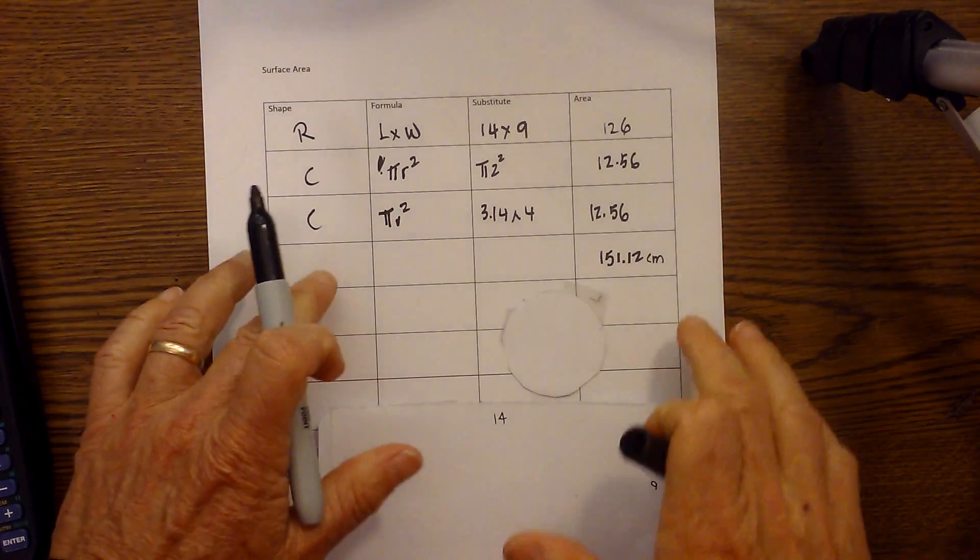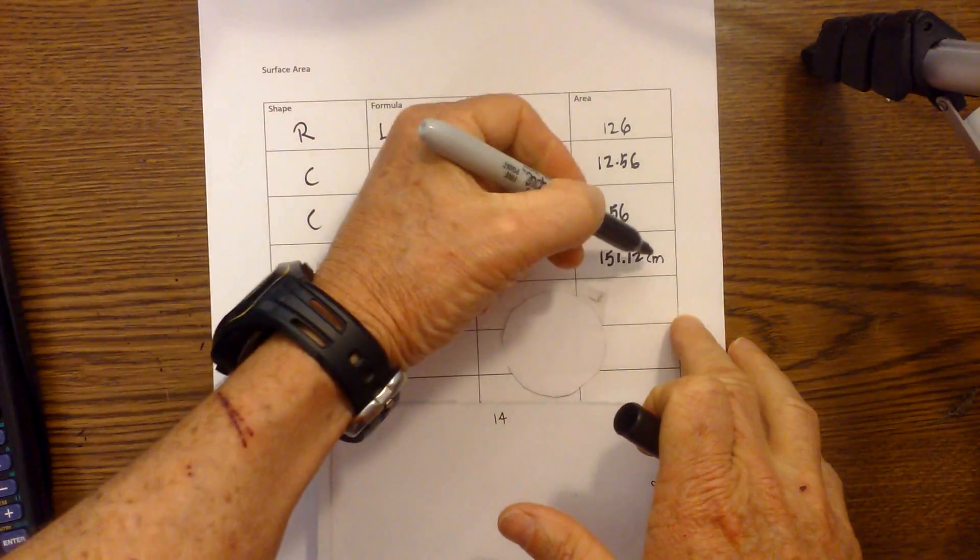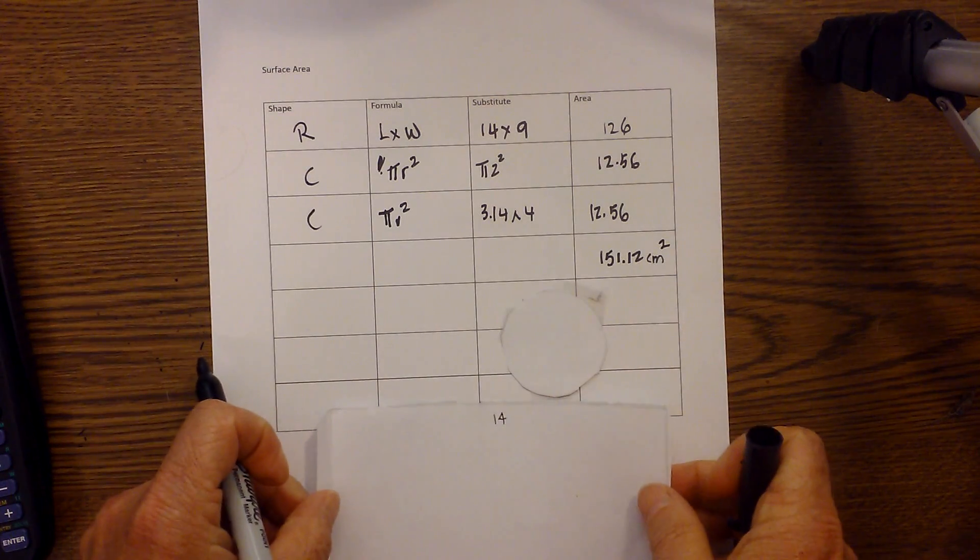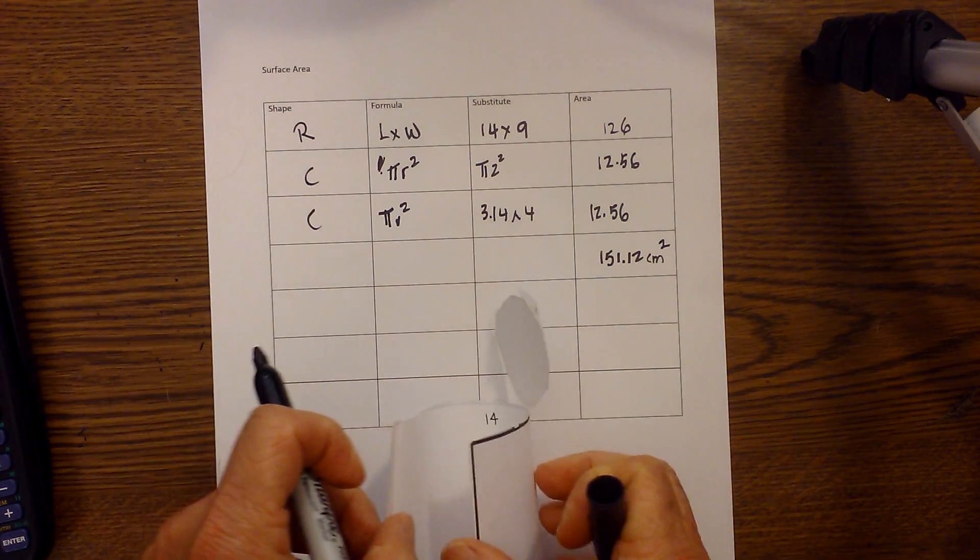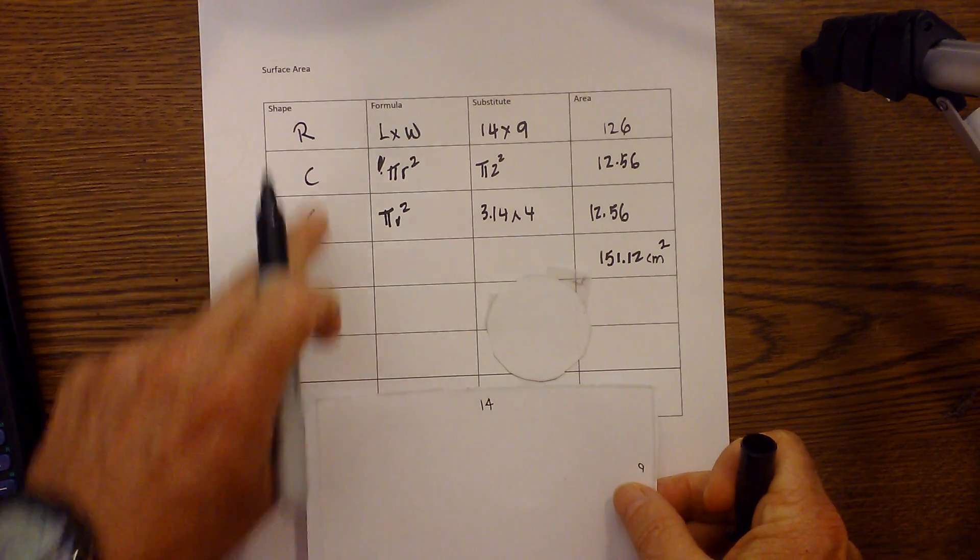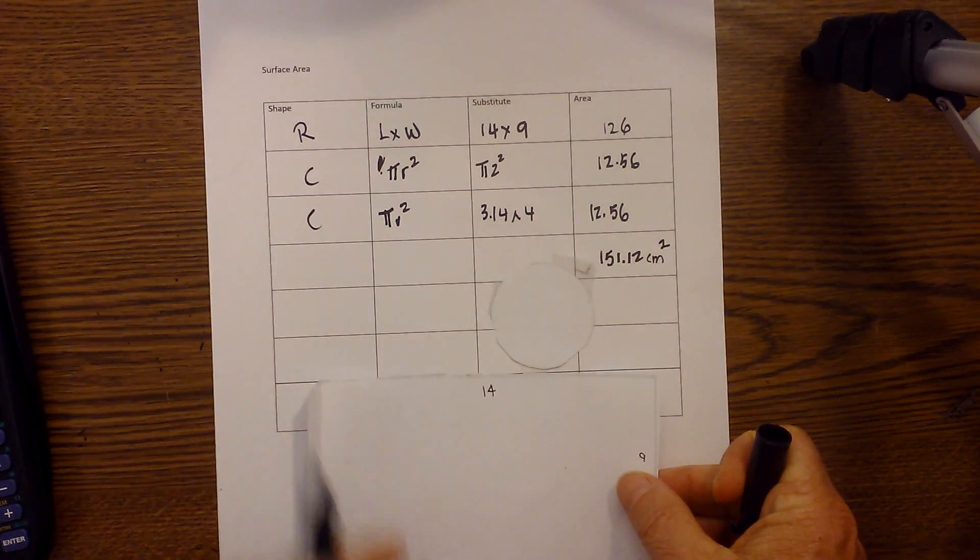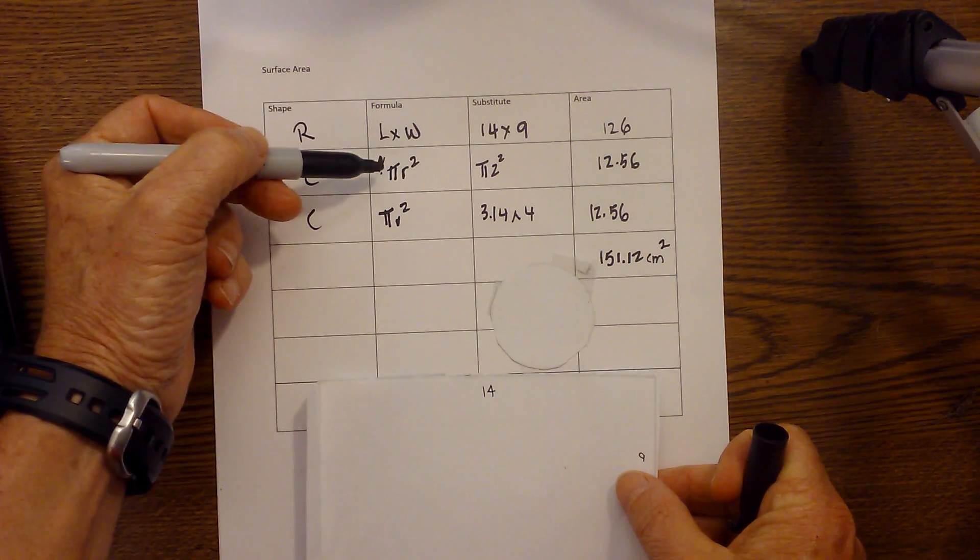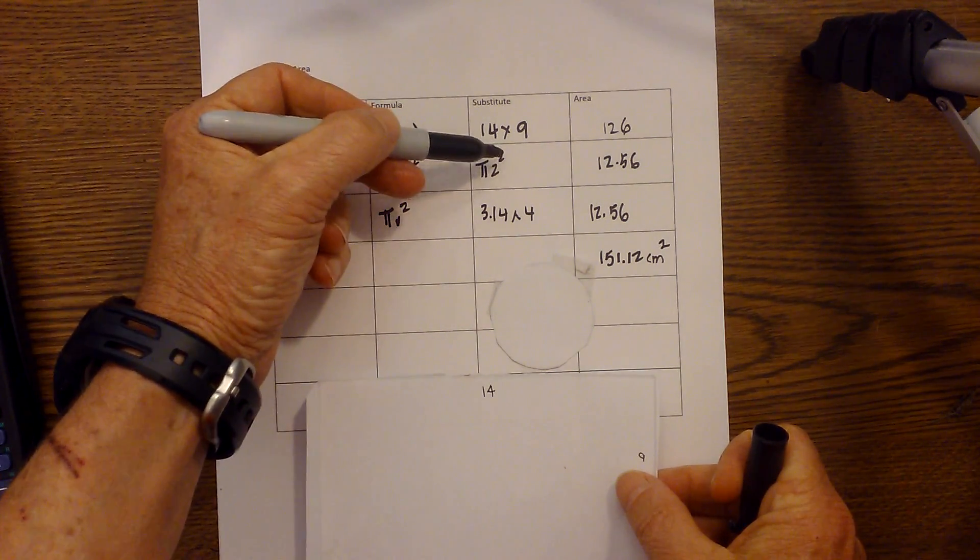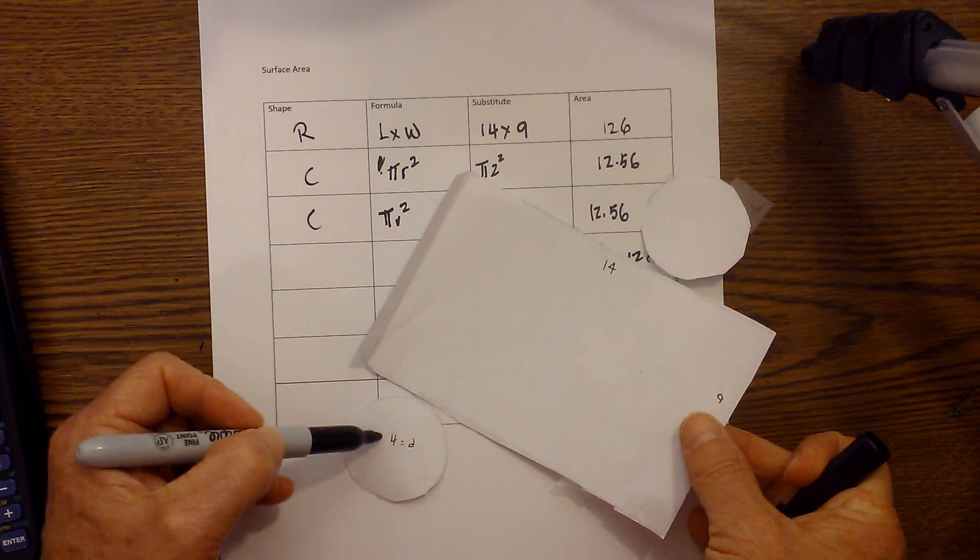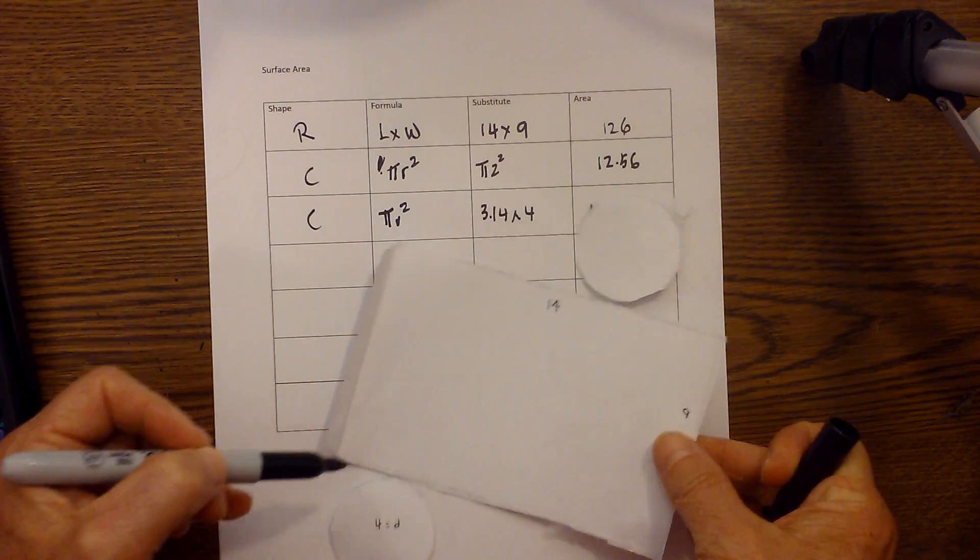Okay, so I'm gonna recap. I have my cylinder, I unrolled it, I had a rectangle that was 14 by 9 and then I had two circles. And the formula for area is pi times radius squared. The diameter was 4, you can see that here, and so the radius is half the diameter.